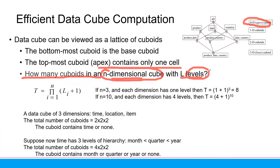For example, for the location dimension, there can be several levels. The lowest level could be street name, then we go to a higher level such as city, then province, then country. In this case we have four levels: one, two, three, and four. The number of cuboids will be determined by the number of dimensions and also the number of levels.